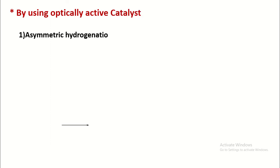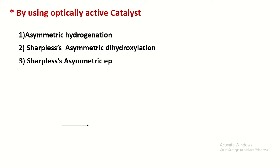It can be done by using chiral reducing agent, by using CBS reducing agent, by using Baker's yeast, and Pseudomonas putida. Now in this video, I will focus on the formation of optically active compound by using optically active catalyst.